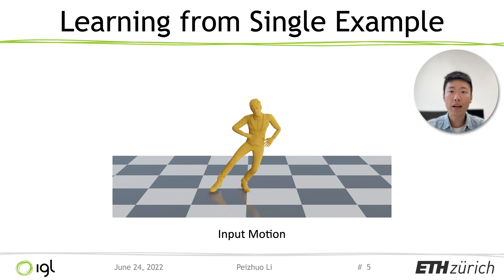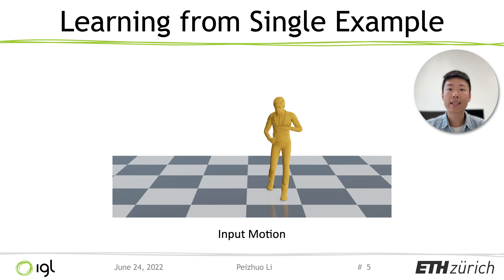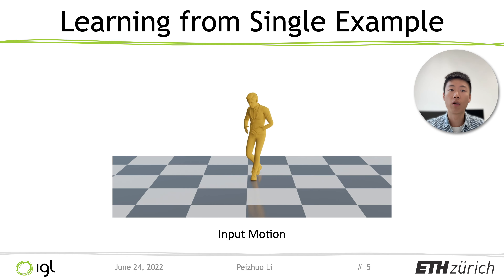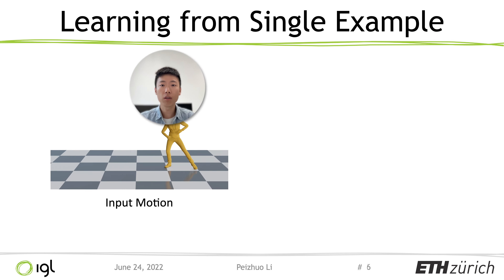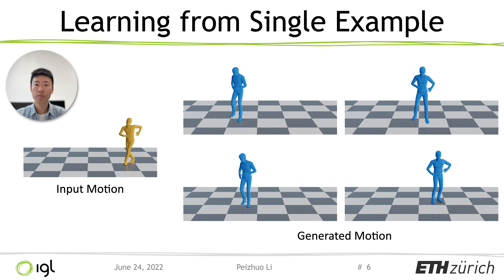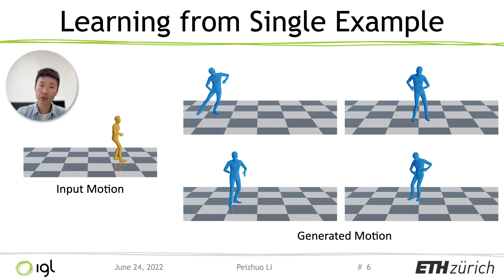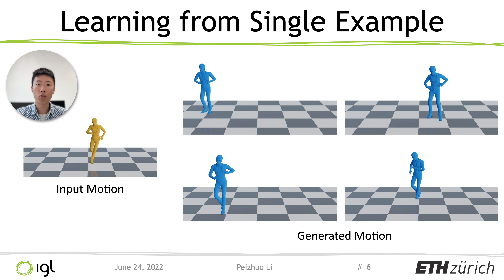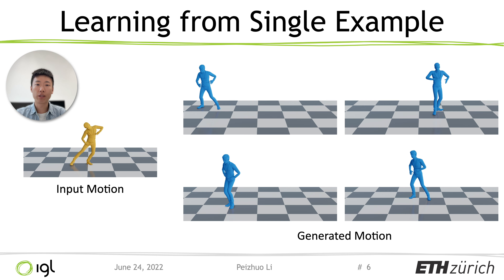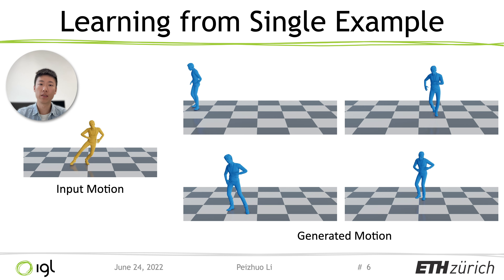To overcome the lack of datasets, we present Ganymator, a generative model that learns to synthesize novel motions from a single, short motion sequence. Ganymator generates motions that resemble the core elements of the original motion while simultaneously synthesizing novel and diverse movements.